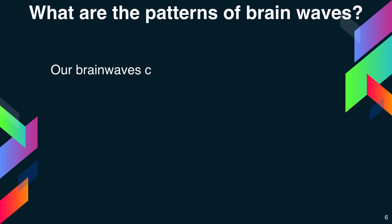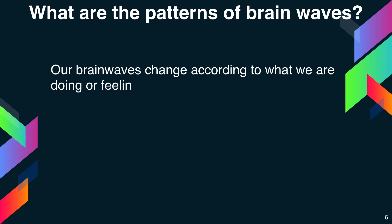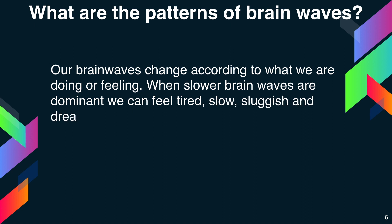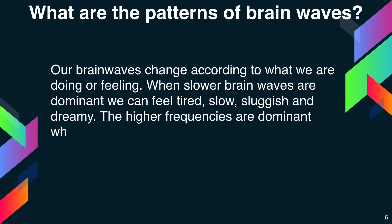Our brain waves change according to what we are doing or feeling. When slower brain waves are dominant, we can feel tired, slow, sluggish and dreamy. When higher frequencies are dominant, we can feel wired and hyper alert.